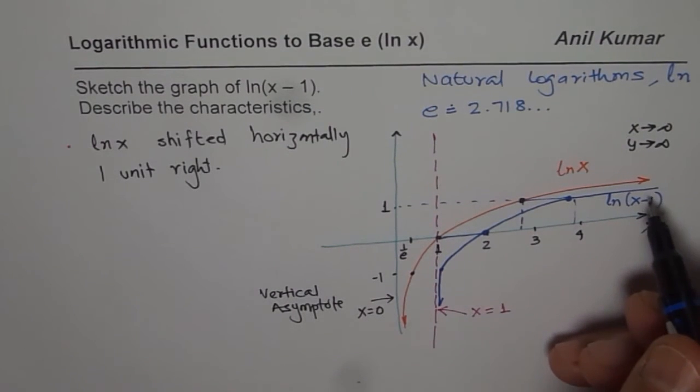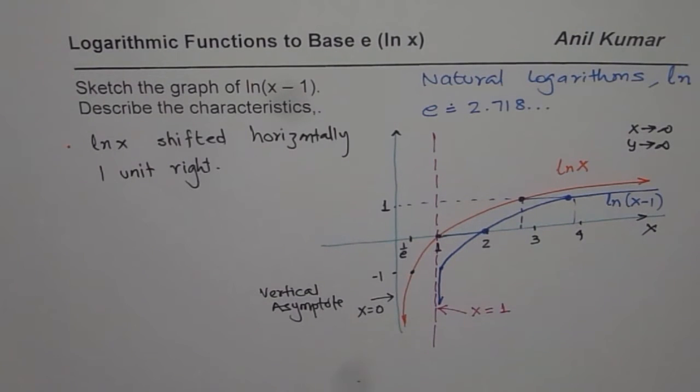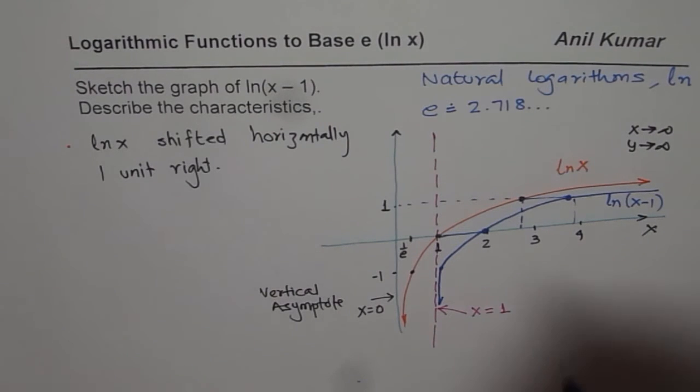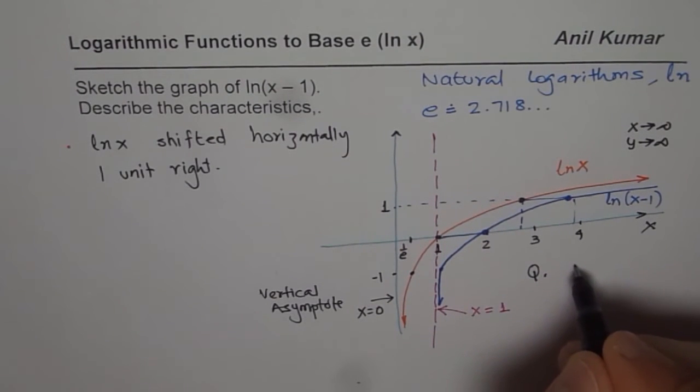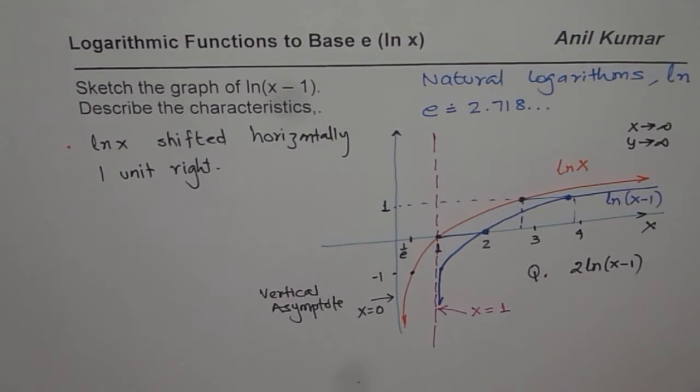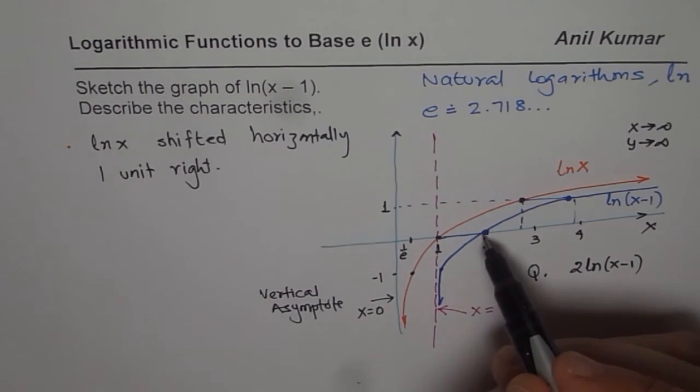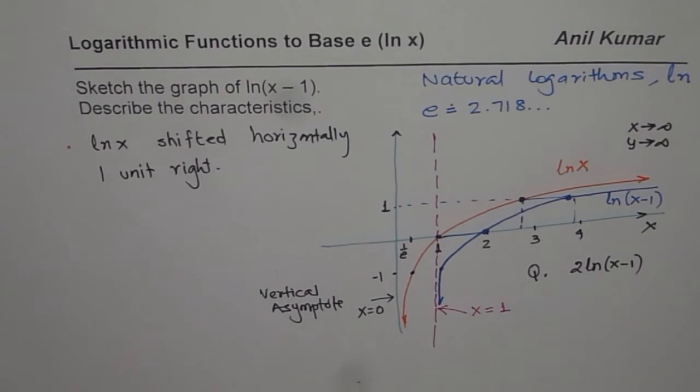That is how you should be sketching your graph for the given functions. It's a good practice to first do the parent function, then apply the transformations. For example, now if I change my equation for you to practice, let's say my question for you is sketch 2 times ln(x-1). In that case, what are you going to do? You can stretch every y point by 2 times; of course this x-intercept remains at the same position.